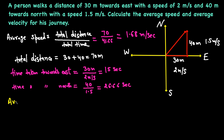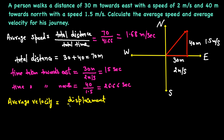Now let's find the average velocity. Average velocity equals displacement over time taken. Displacement is the shortest distance between the starting point and the final position — not the total path traveled.